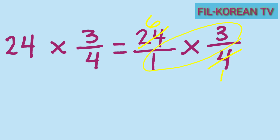Since 1 and 3 have no common factor other than 1, we will not divide them further. So the next step is to multiply the numerators and the denominators. 6 times 3 equals 18, and 1 times 1 equals 1.